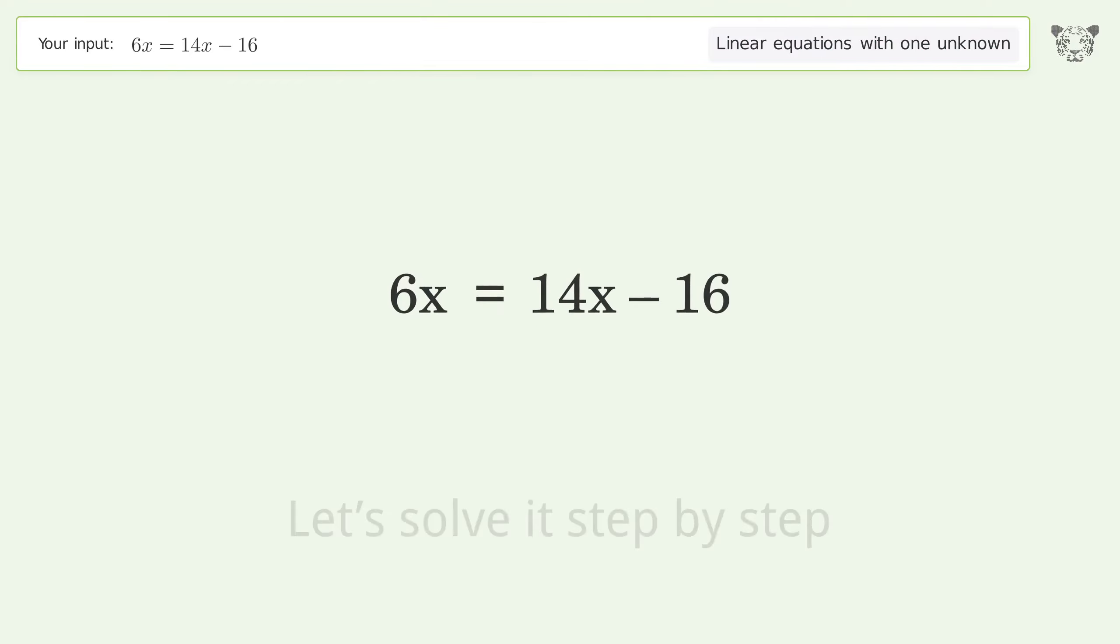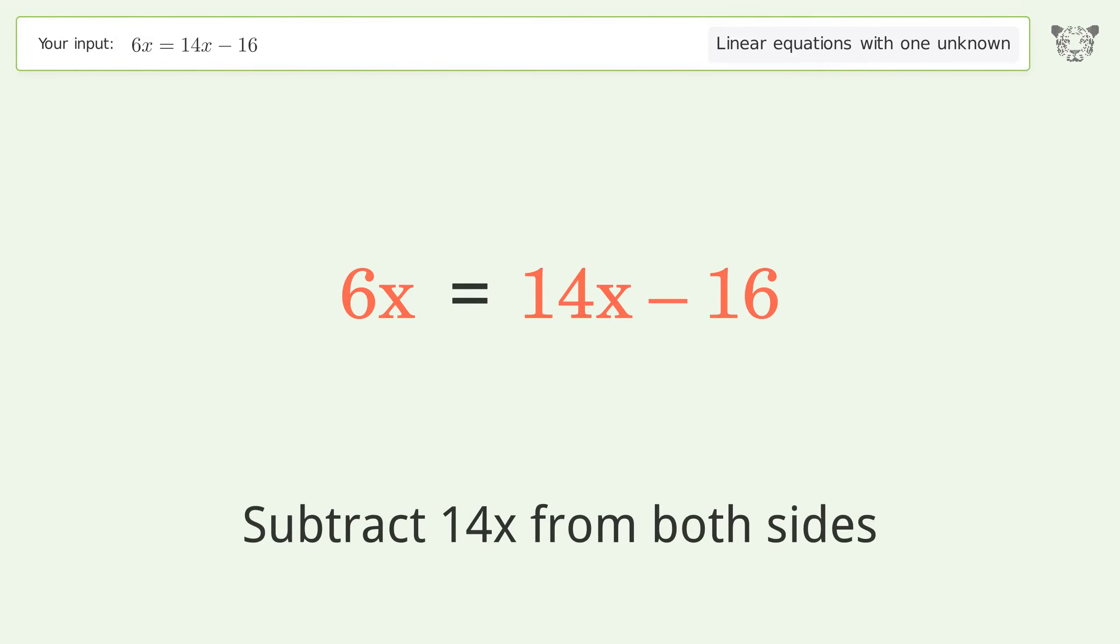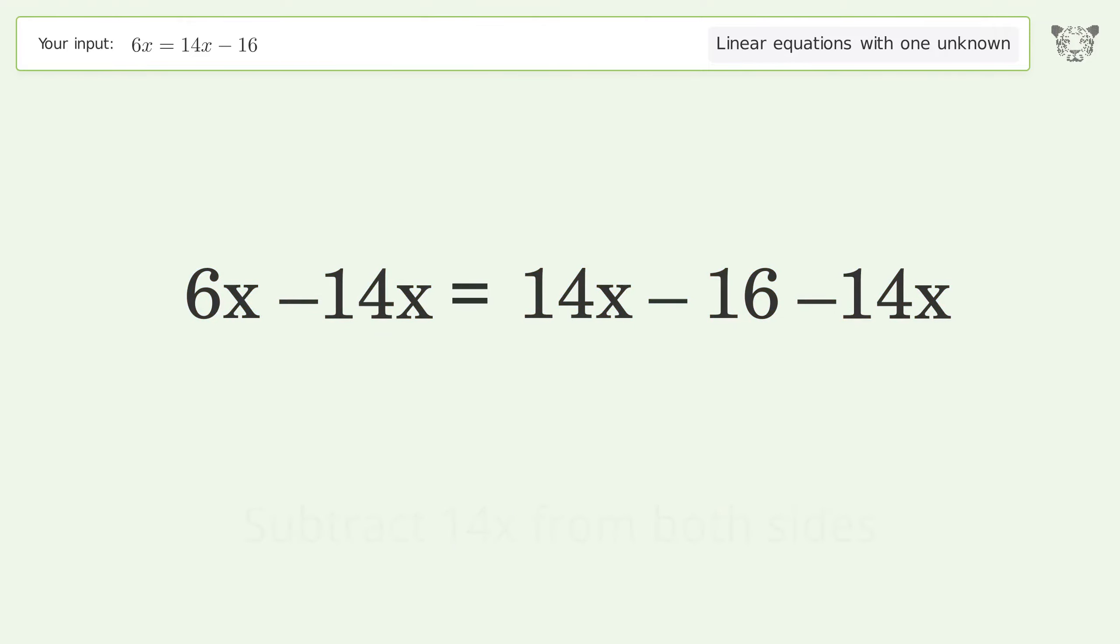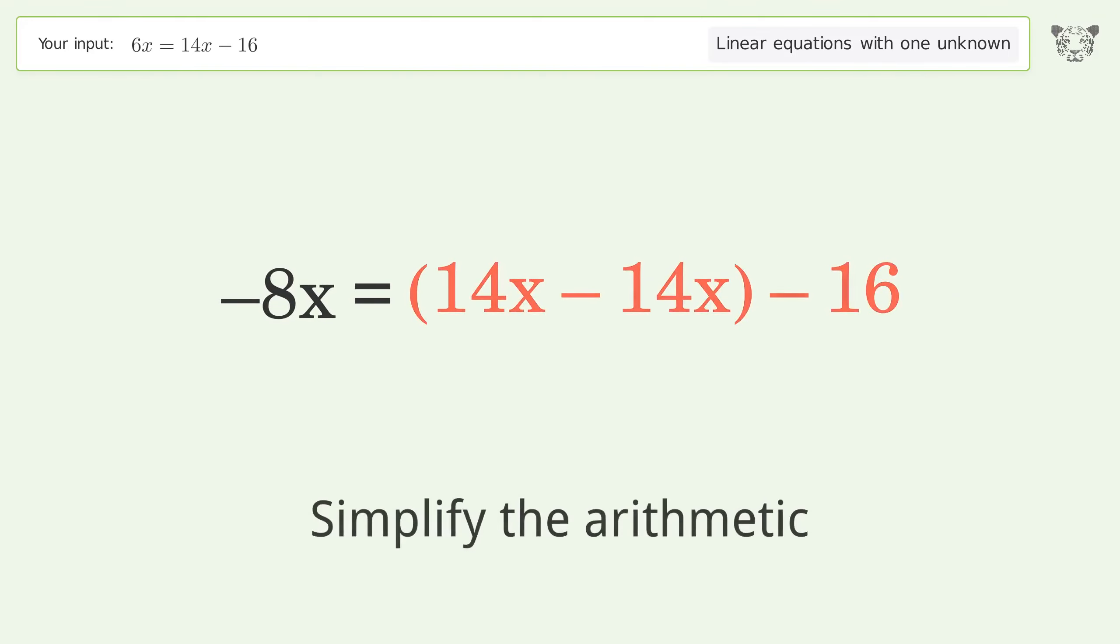Let's solve it step by step. Group all x terms on the left side of the equation. Subtract 14x from both sides. Simplify the arithmetic. Group like terms. Simplify the arithmetic.